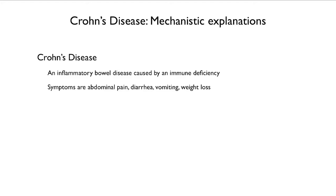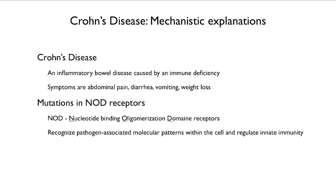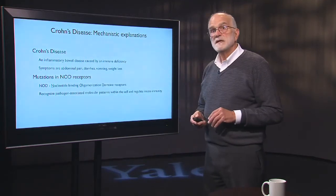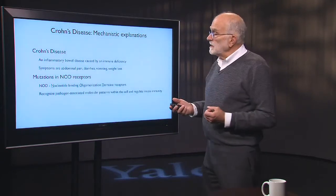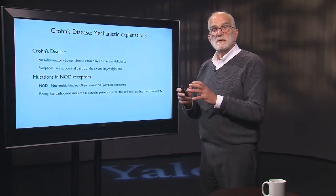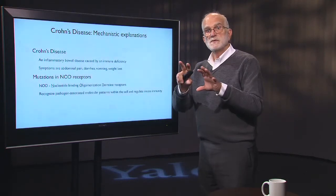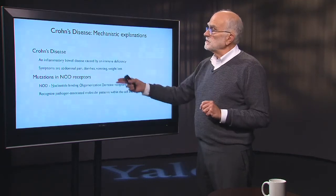Crohn's disease is an inflammatory bowel disease caused by an immune deficiency. The symptoms are abdominal pain, diarrhea, vomiting, and weight loss, and the consequence can be death. There is a strong association with genetic variation in NOD receptors — nucleotide-binding oligomerization domain receptors — which recognize pathogen-associated molecular patterns (PAMPs) and help regulate innate immunity. If a mutation knocks out a receptor involved in normal healthy crosstalk, the immune system becomes essentially blind to the presence of gut bacteria, and the result is inflammatory bowel disease.